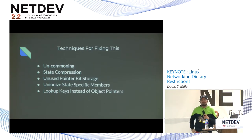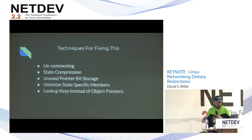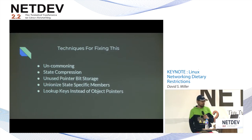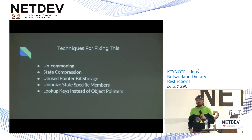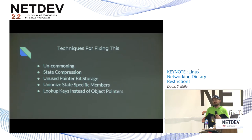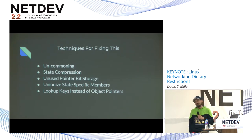What techniques can we use to fix this data structure bloat problem? The first one I call uncommoning. The next is state compression — reducing the representation of a piece of data to the smallest point possible. There's unused pointer bit storage: the lowest bits of pointers are freely usable for Boolean and other small integer state. There's unionizing state-specific members — a technique used in struct page for a long time, where two members used at disjoint points in time safely share the same memory area. And finally, using lookup keys instead of object pointers: if the key used to look up an object is smaller than a pointer, store the key instead.